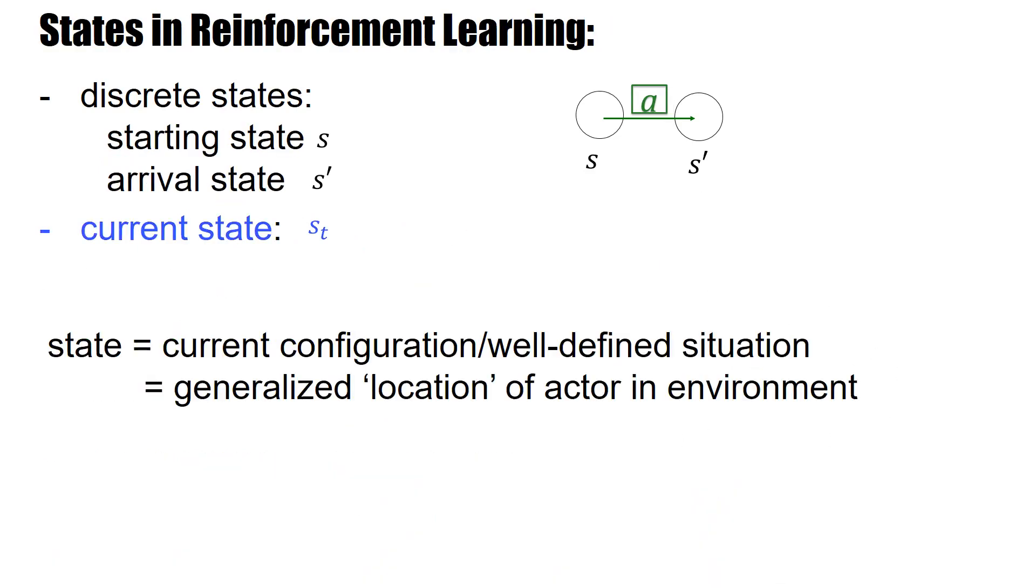As I said, we have discrete states, we have the previous state or the old state, and then we have the new state, and we say the current state is s_t. And now often the state space really is continuous, but then we have to decide what we define as a state. Now, let me say a state, when you define states, you should watch out that a state corresponds to a well-defined situation, to the current configuration. So it's a generalized notion of location of the actor in an environment.